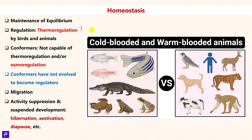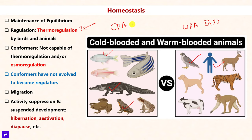Thermoregulation: birds and mammals are warm-blooded animals, also called endotherms — they are capable of maintaining a constant body temperature irrespective of surrounding conditions. Cold-blooded animals like fishes, reptiles, and amphibians are not capable of maintaining a constant body temperature; their body temperature depends on the ambient surroundings. Animals capable of thermoregulation are called regulators, and those that are not are called conformers.